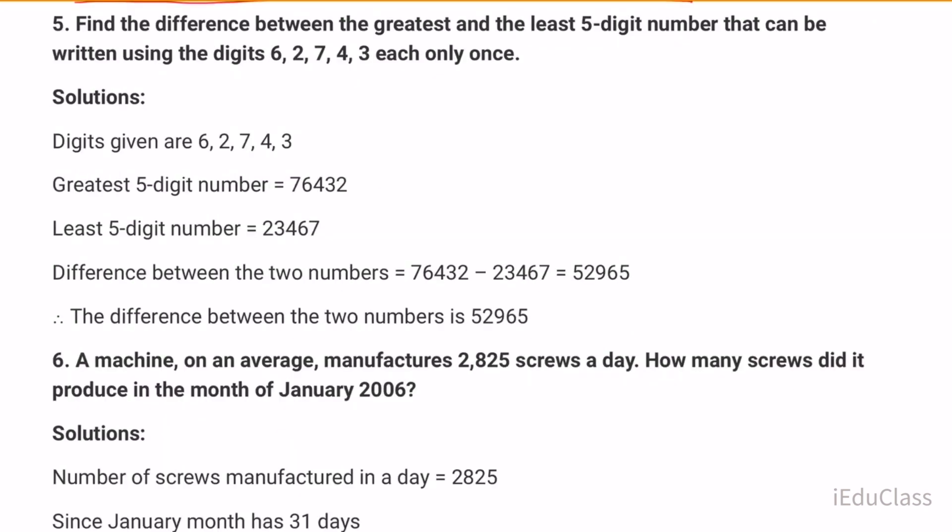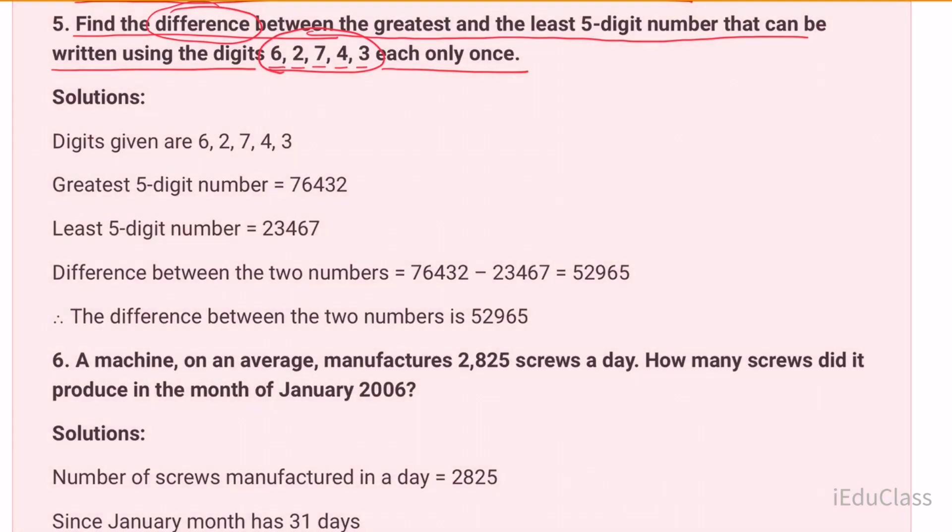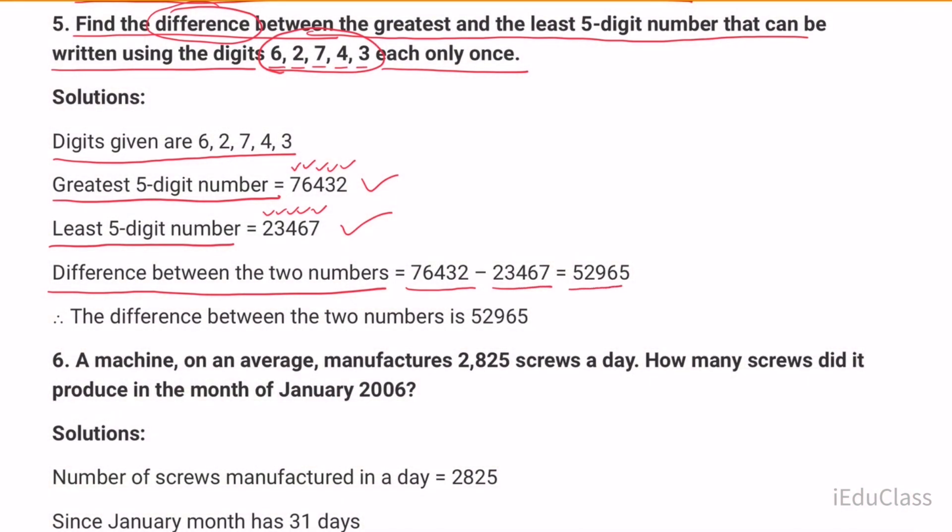Question five: Find the difference between the greatest and the least five-digit number that can be written using the digits 6, 2, 7, 4, 3 each only once. Greatest five-digit number is 76432. Least five-digit number is 23467. Difference between the two numbers is 76432 minus 23467 equals 52965.